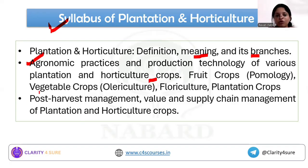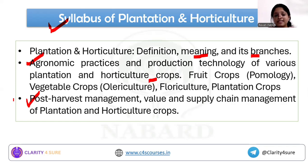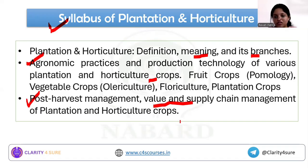The next syllabus topic is post harvest management and value and supply chain management for plantation horticulture crops. If you went through the 2024 paper, these are the exact words used in the descriptive 15-marker compulsory question — explaining the importance of post harvest management and value and supply chain management of plantation horticulture crops. This highlights the importance of this syllabus, so please do not leave any keyword from it.